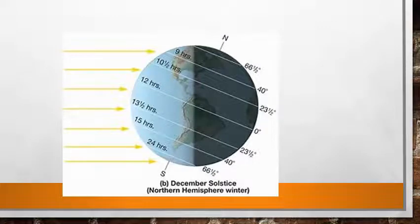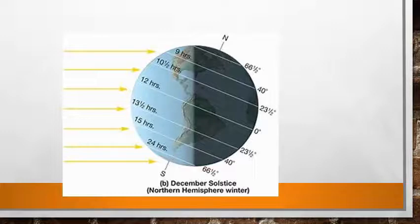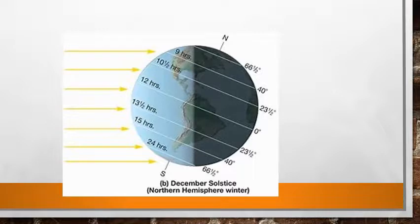On December 22nd, the sun's rays fall vertically on the Tropic of Capricorn. The northern hemisphere has the shortest day and the longest night, while in the southern hemisphere December 22nd is the longest day and the shortest night. The day is 24 hours beyond the Antarctic Circle. The duration of light increases from 12 hours at the equator to 24 hours at the south pole, with light lasting 6 months at the south pole. It is summer in the southern hemisphere. The altitude of the midday sun is 90 degrees at the Tropic of Capricorn.